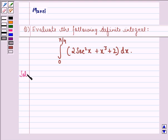So let us start with the solution to this question. Now, the integral given to us is 0 to pi by 4, here the limit goes from 0 to pi by 4, 2 secant square x plus x cube plus 2 dx.